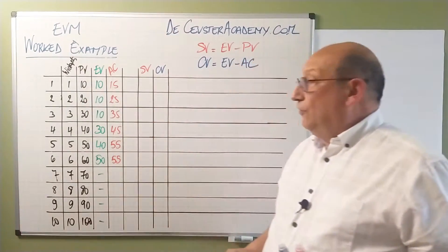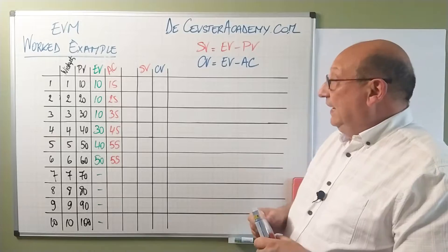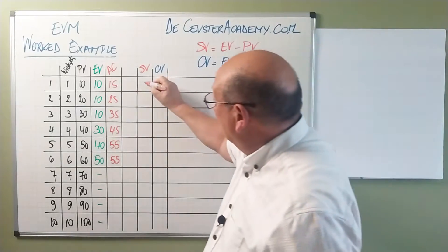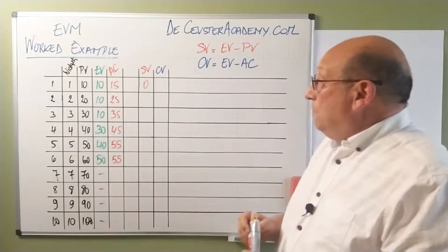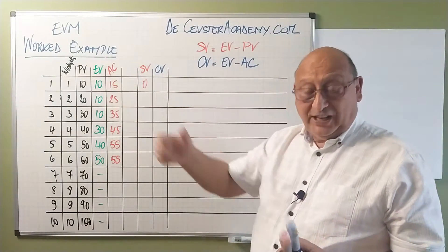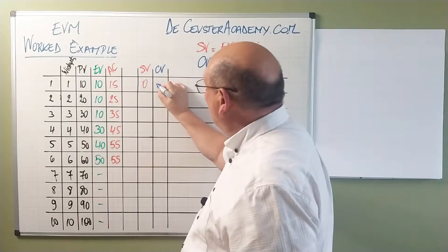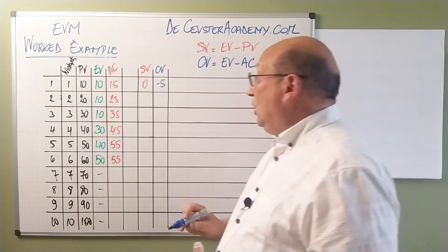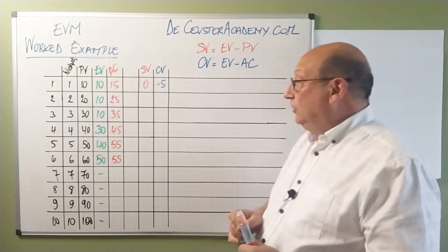Planned value is equal to earned value so my schedule variance is zero. My cost variance, however, I spent 15 where I only created a value of 10, so I have a cost variance of minus 5 which means I'm over budget.